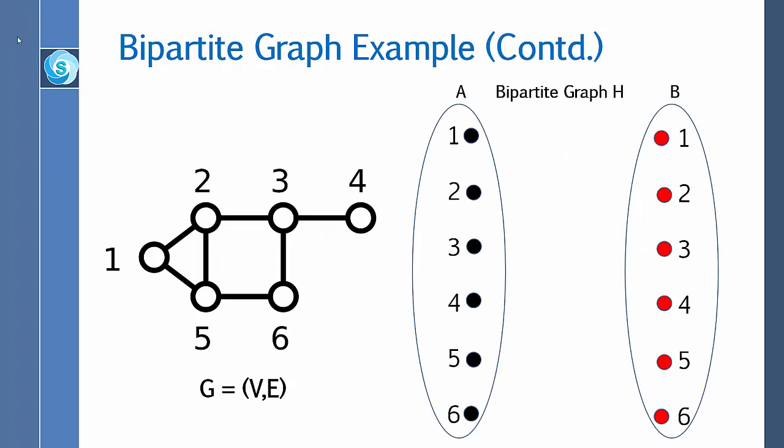Let me expand the construction of the bipartite graph H. A represents the set of all vertices of graph G: one, two, three, four, five, six. B also represents the set of all vertices from G: one, two, three, four, five, six. We put an edge between a vertex from A and a vertex from B if they are adjacent to each other in the original graph.